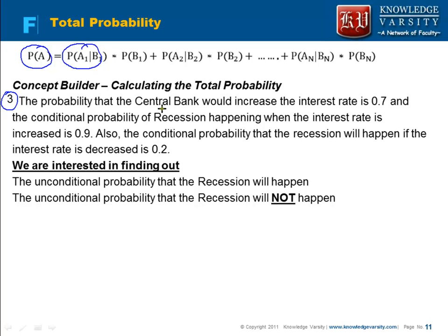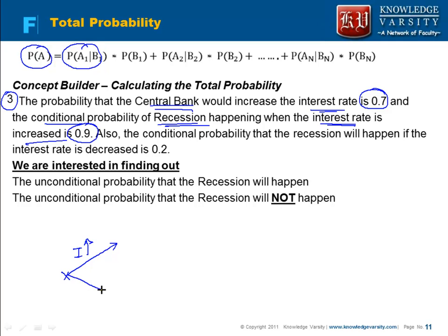They are saying that the probability that the central bank would increase the interest rate is 0.7. The conditional probability of recession happening when the interest rate is increased is 0.9. The probability of increase in the interest rate is 0.7 and the probability of decrease in the interest rate is 0.3, which is 1 minus 0.7. These are two mutually exclusive events.